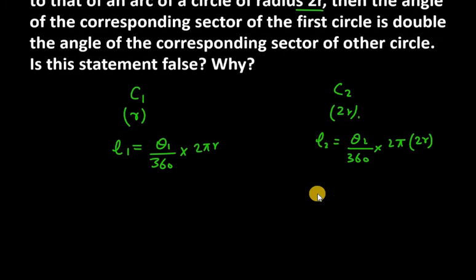So they are saying that l1 and l2 are the same. Then, the angle of the corresponding sector of the first circle is double the angle of the corresponding sector of the other circle.